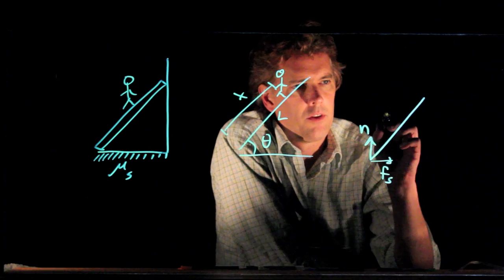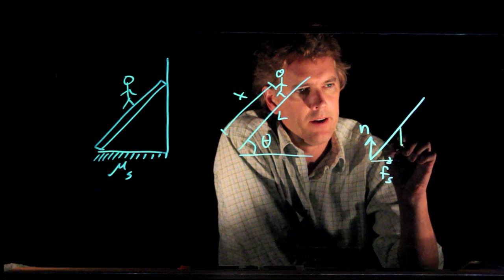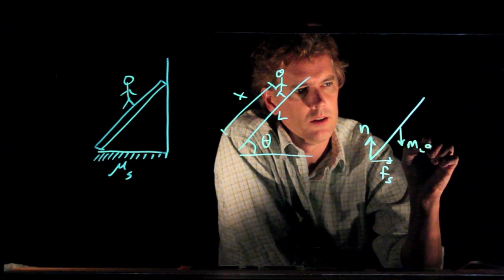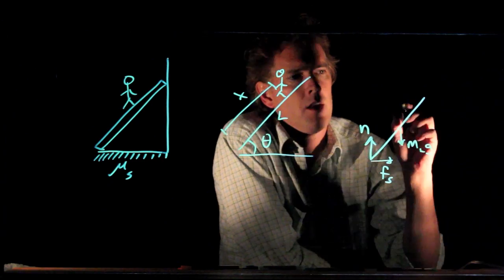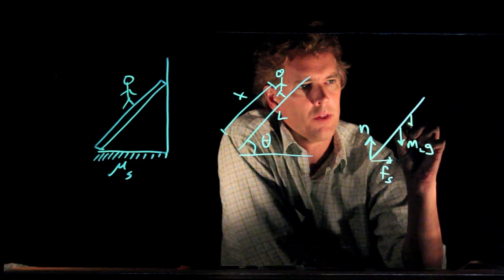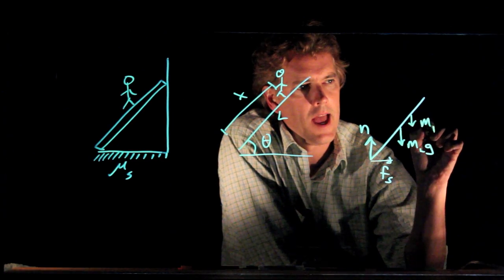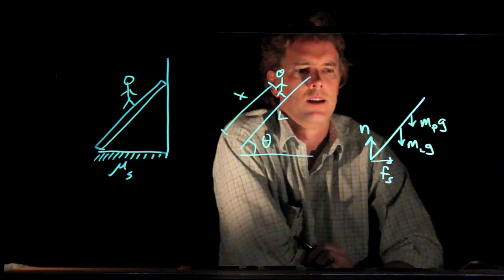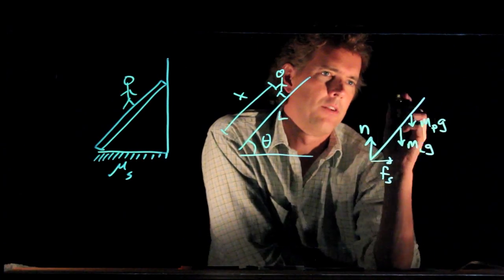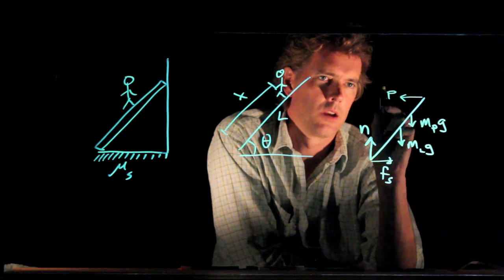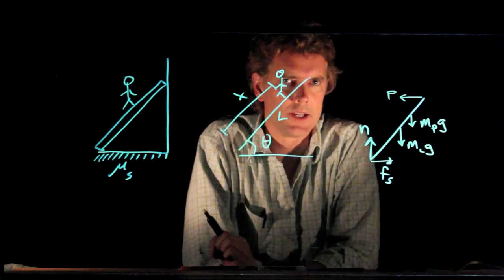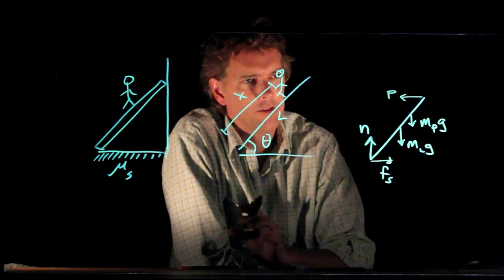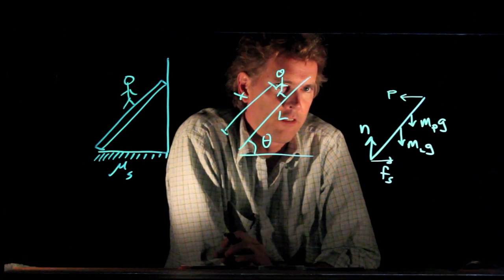There is the weight of the ladder, m sub l times g. There is the weight of the person, m sub p times g. And there is one more thing which is the push of the wall on the top of the ladder. Alright, so that's our force diagram.